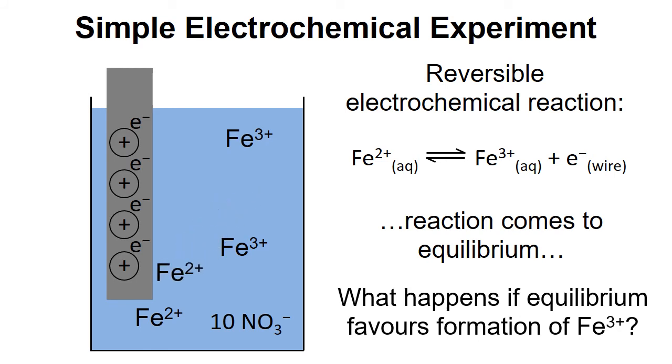Let's take an Fe2+ that's going to donate an electron to the wire and turn into Fe3+. Now we see that the solution has become slightly positive and the wire has become slightly negative. Again we get this separation of charge between the wire and the solution leading to a potential difference between them.